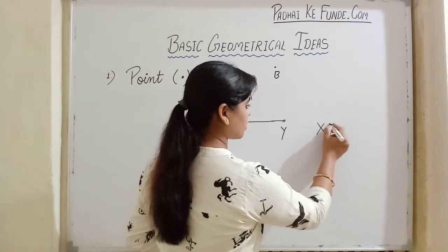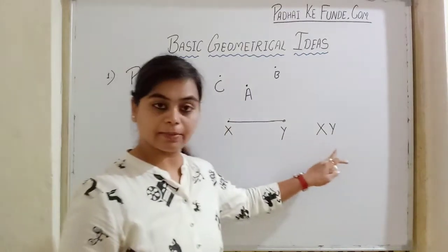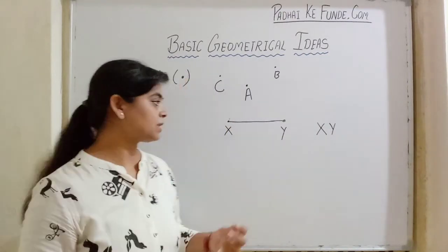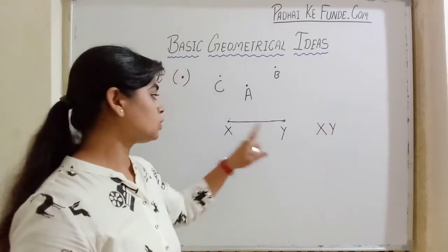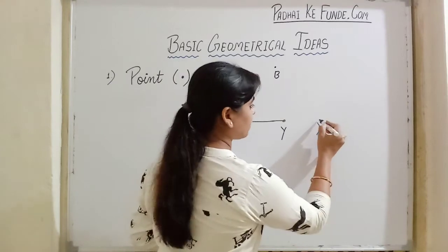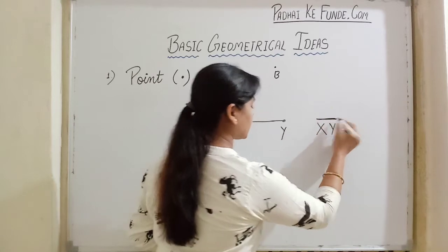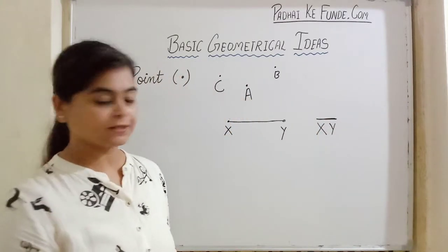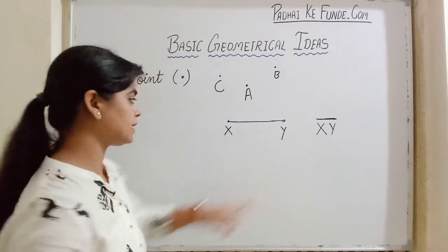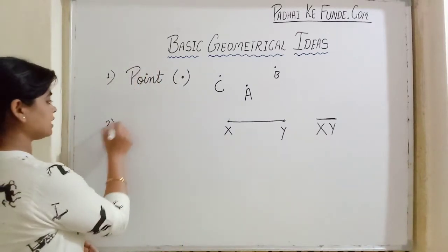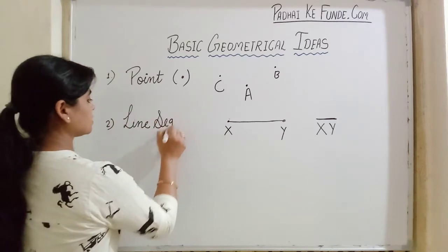So as we have two points here, the name of line segment will be represented by two letters, that is the names of the points used there - X, Y. This line segment is line segment XY. To show it, we need to put a bar on XY. The symbol shows that XY is a line segment.